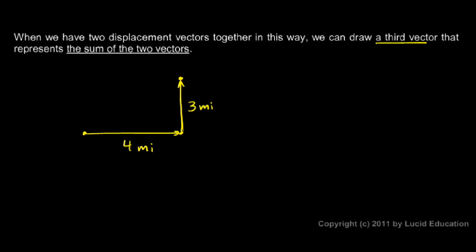And then we can draw a third vector. And the third vector represents the sum of those two. The third vector should go from the very beginning of the hike to the very end. So, the third vector goes like this. And make sure you draw the arrowhead on it, and it needs to be pointing the correct way.